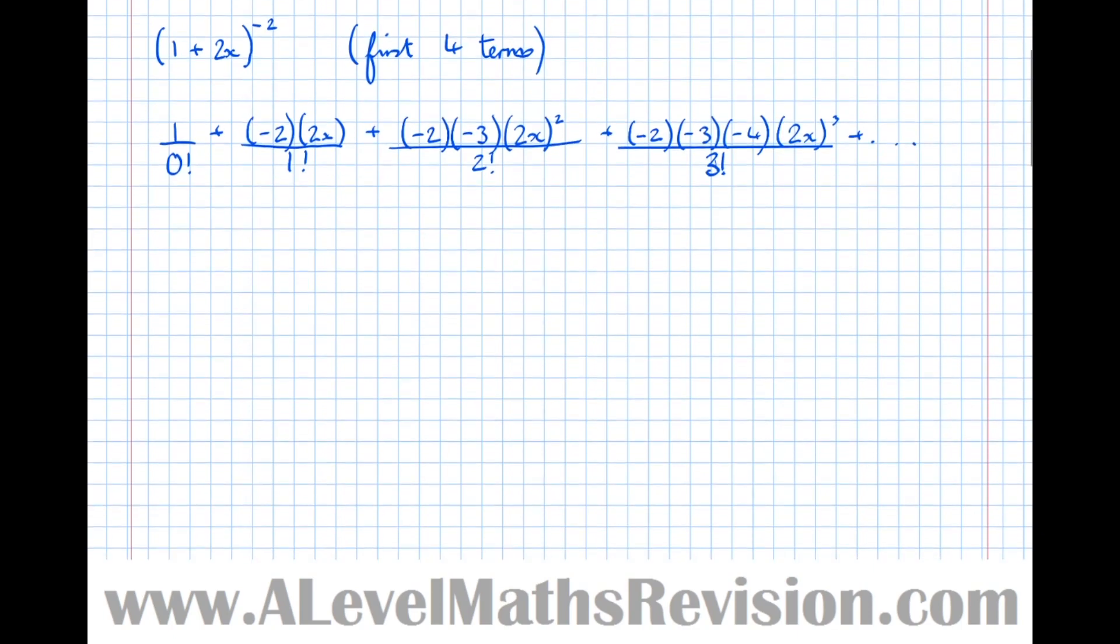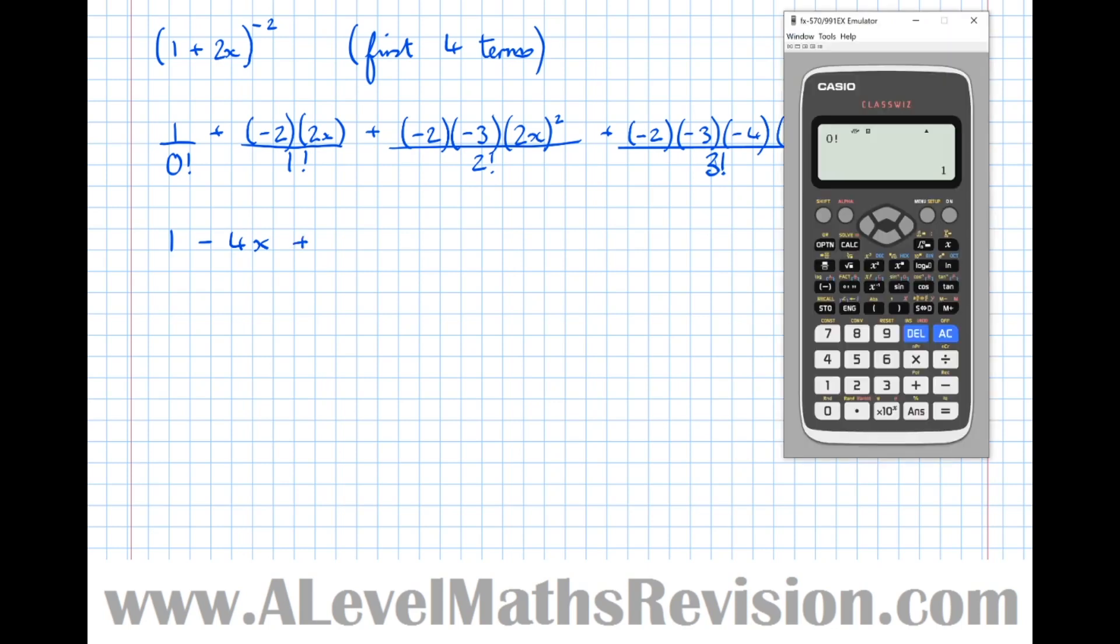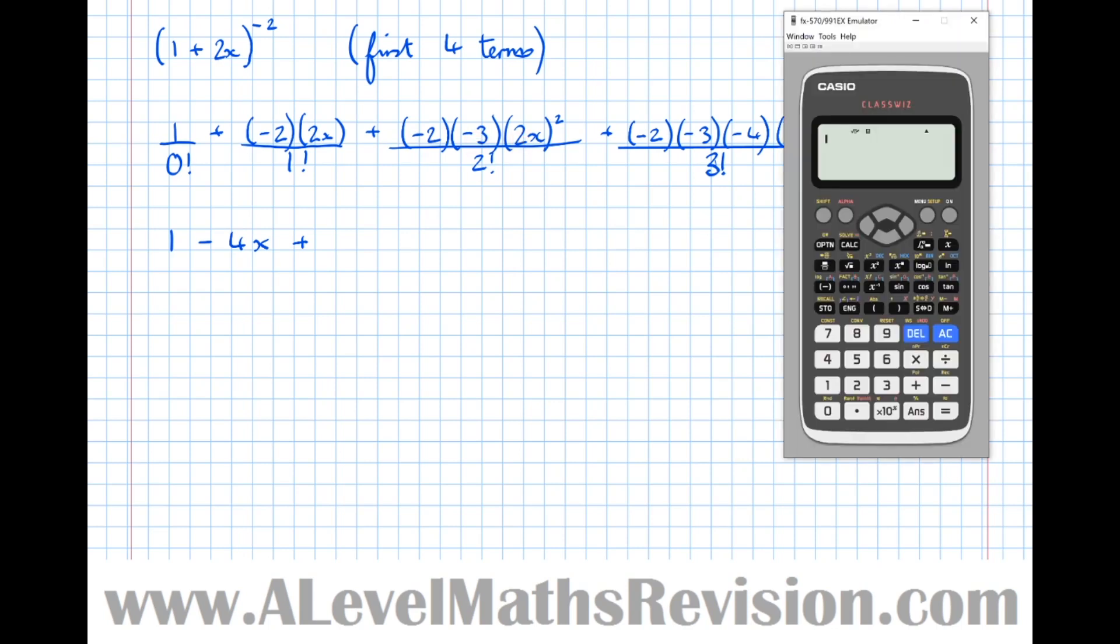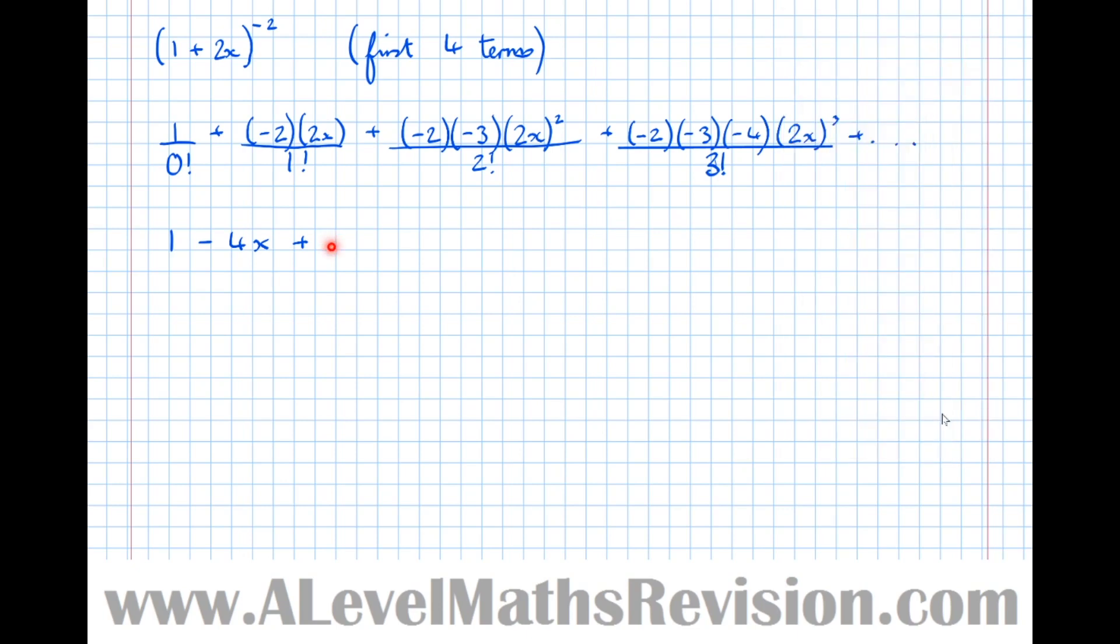Let's simplify this. 1 over 0 factorial is just 1, plus minus 2 times 2, which is minus 4x. At this point, I think it's much easier to decide what the sign is going to be first. We've got 2 minus signs, so that's going to make a plus. This saves time in typing in the calculator. I've already decided it's a plus because there's 2 minus signs, so I'm going to type in the calculator 2 times 3 times 2 squared divided by 2 factorial, which is 12. So plus 12x².